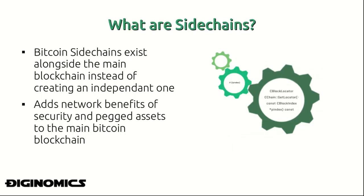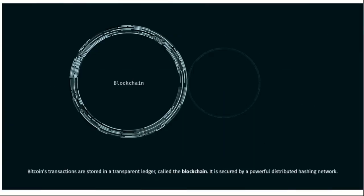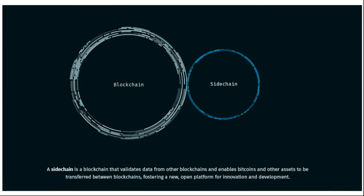By integrating with the already existing main Bitcoin network, sidechains would have radical implications and opportunities for innovation of the internet of money, which is Bitcoin. One of the main firms working on this is Blockstream, which describes sidechains as one of the key components for conducting business on a global and internet-based ledger. Their specification describes sidechains as follows: Bitcoin's transactions are stored in a transparent ledger called the blockchain, secured by a powerful distributed hashing network. A sidechain is a blockchain that validates data from other blockchains and enables bitcoins and other assets to be transferred between blockchains, fostering a new open platform for innovation and development.